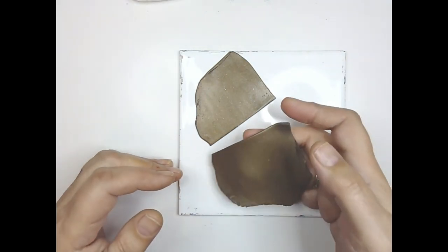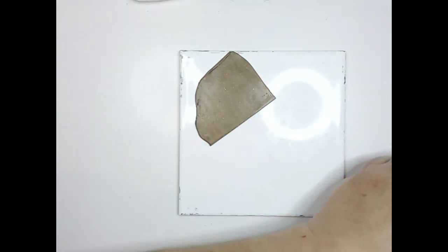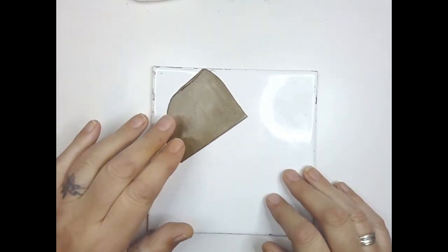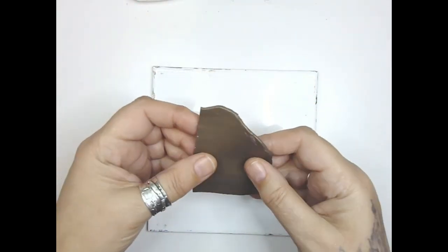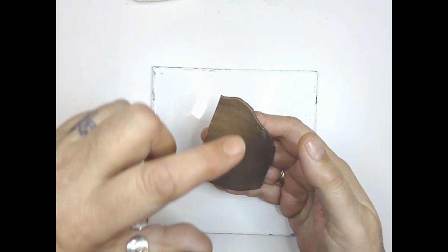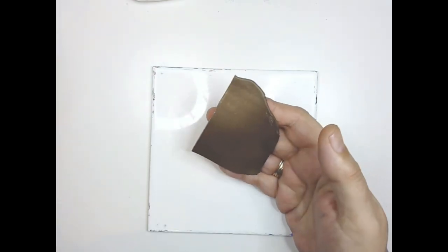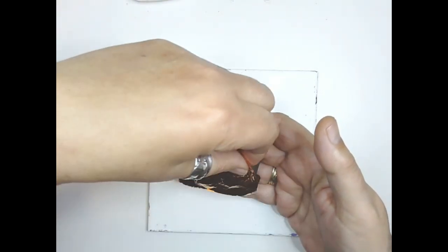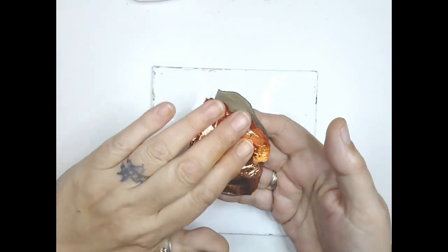They're rolled out at a number one at the moment. This I'm putting to one side, this is going to be the background so I want it to a number three but I want it to crackle, so I'm doing it on a number one now and I'm literally just adding some copper foil to it.